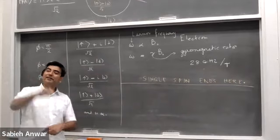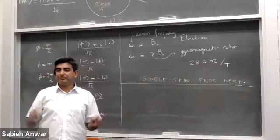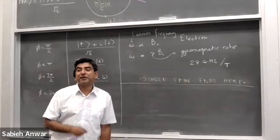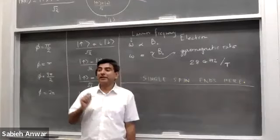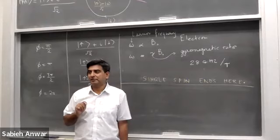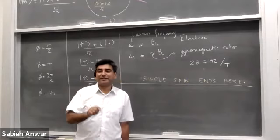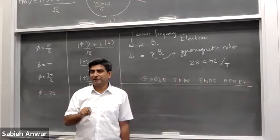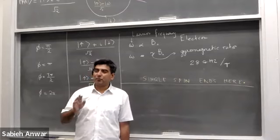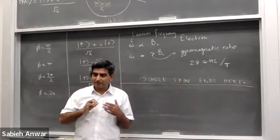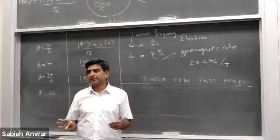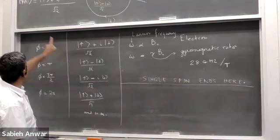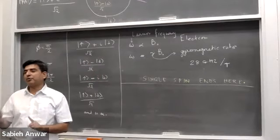Now let's come back to our radical pair inside the bird's eye. A pair of radicals has been generated by a photochemical reaction. As you can imagine, this radical pair is going to respond to the Earth's magnetic field, and by virtue of that it's going to tell where the bird is and what direction it's heading — whether it's going north, south, or what path it's taking on the magnetic map. We have two electrons in a singlet quantum state S₀. How does this respond to magnetic fields?